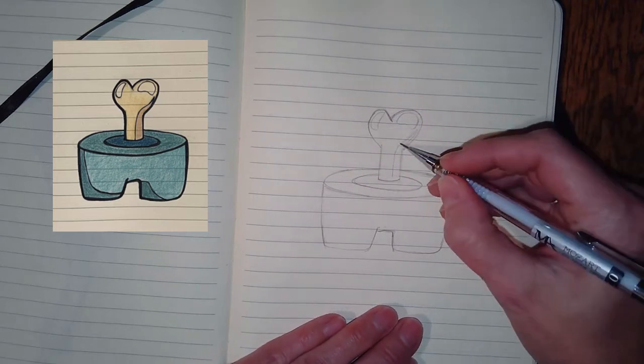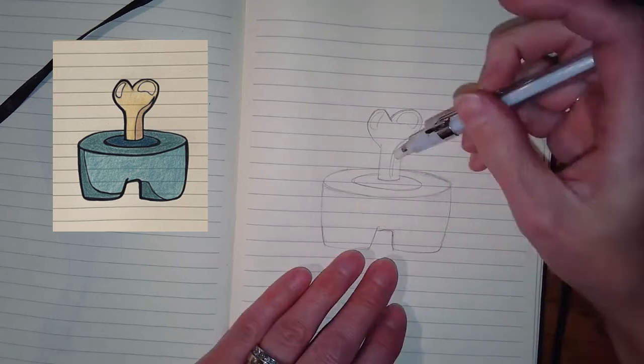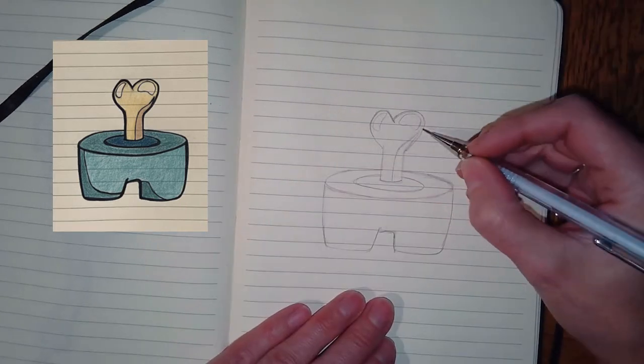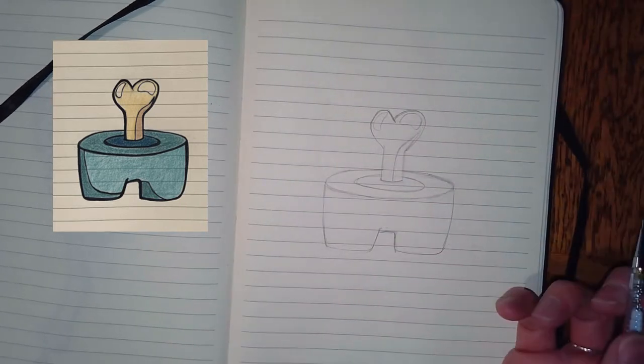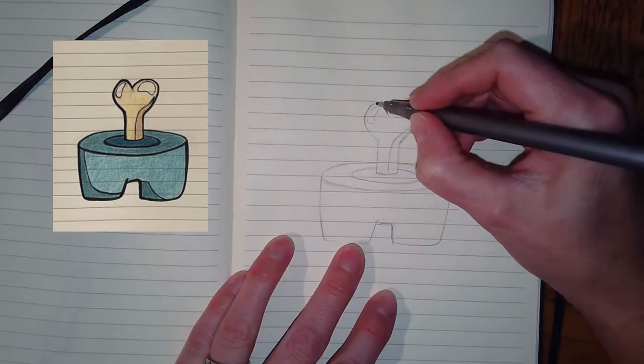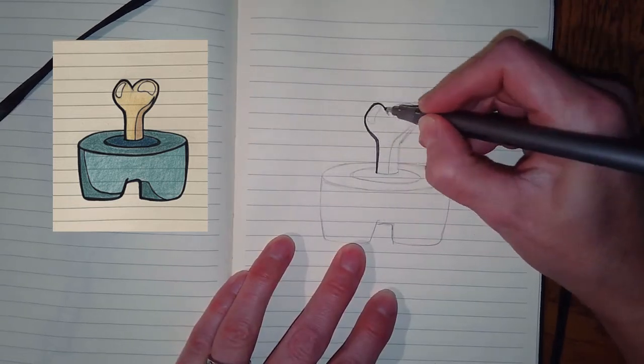Once I'm happy with those, I'm going to drop some shadows down in the legs on the left side of both legs. Then after that you're really ready to ink. It looks like I didn't add my shadows till later, sorry about that.